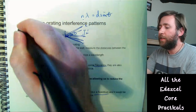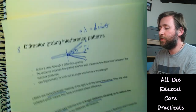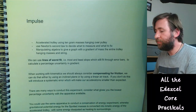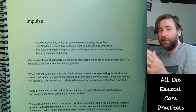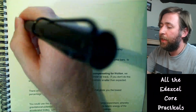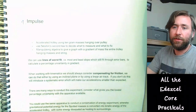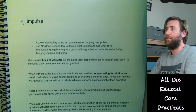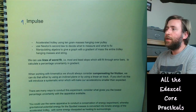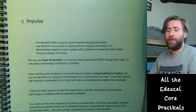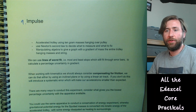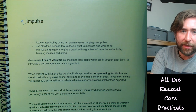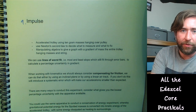If you used white light instead, you'd get a spectrum rather than discrete dot maxima: each colour would form its maximum at a different position, giving overlapping spectra instead of the individual spots needed for accurate measurement. That's number 8 — all the AS physics content. I'll take a quick look at the chat.